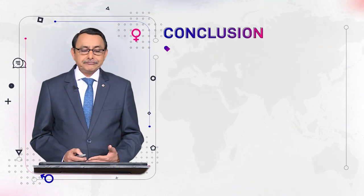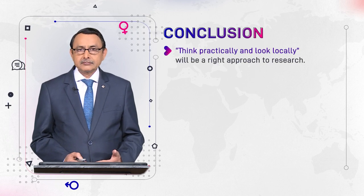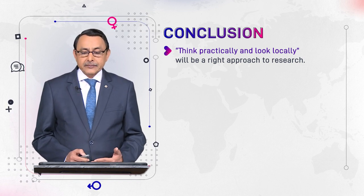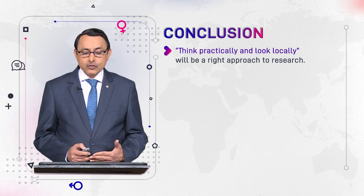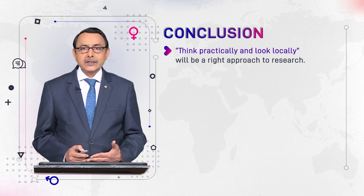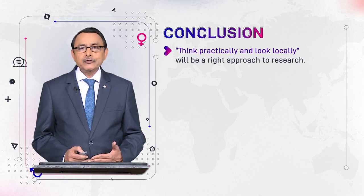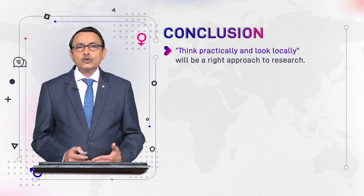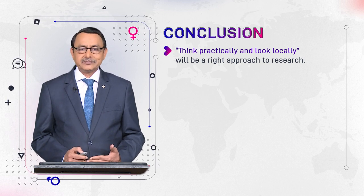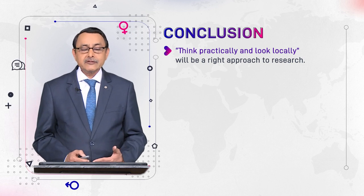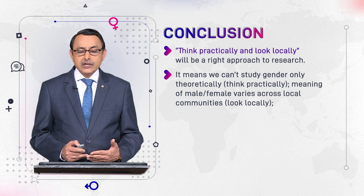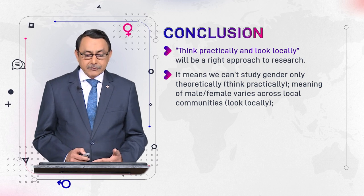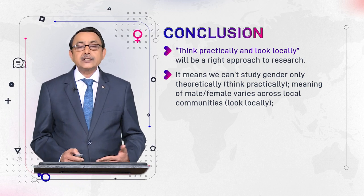We conclude that we have to think practically and look locally. We have to adopt a practice-oriented approach — put our research in some context where people are involved in doing gender, in performing gender, where we can see gender in a physical form. It means we can't study gender only theoretically. Thinking practically means the meaning of male and female varies across local communities.